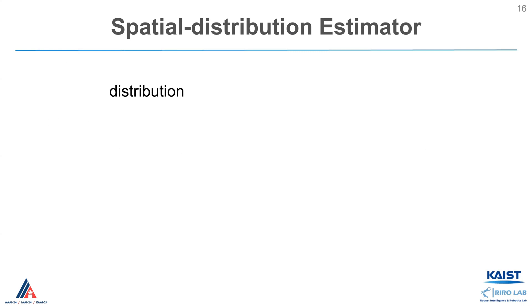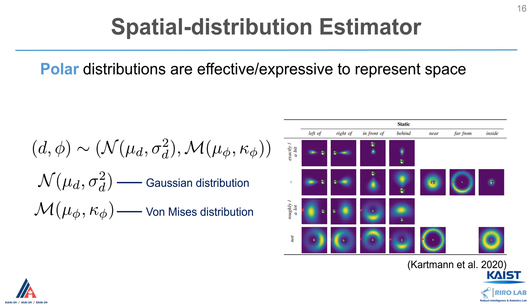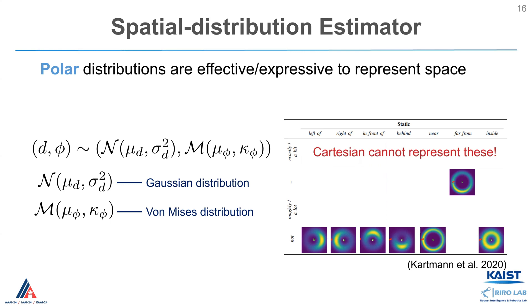Various distribution options are available for representing space. We choose a polar distribution, assuming the distance d follows a Gaussian and the angle phi follows a von Mises. The choice of a polar distribution is motivated by its efficiency and effectiveness in capturing diverse spatial configurations. For example, Cartesian distributions may fall short in representing ring-like spatial distributions, making polar distributions a preferred choice.